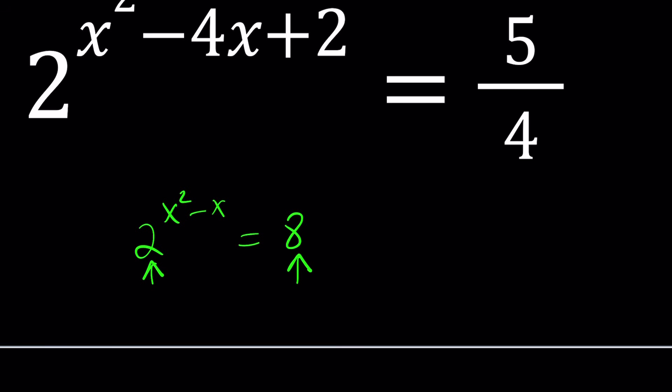which means one of them can be written in terms of the other, or both of them can be written in terms of the same base. Like eight can be written as two to the power three. From here, you can just set the exponents equal to each other, and boom, you'll get a solution.